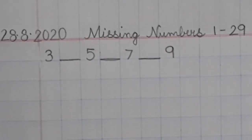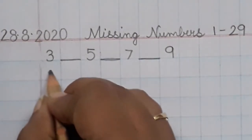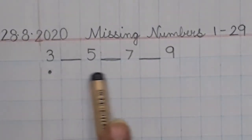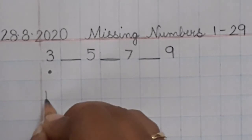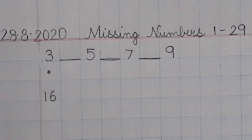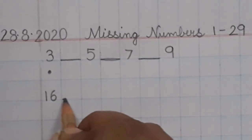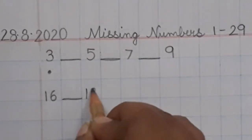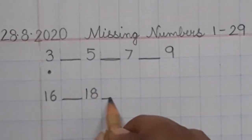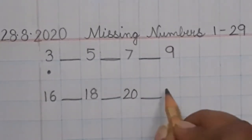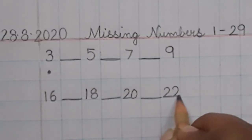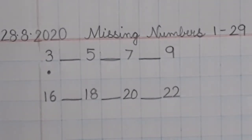I hope you all have written, children. Now please put a dot over here, that means no writing over here. Now below the dot, write number 16 in the same box, dash, 18, dash, 20, dash, 22. 16 dash 18 dash 20 dash 22.